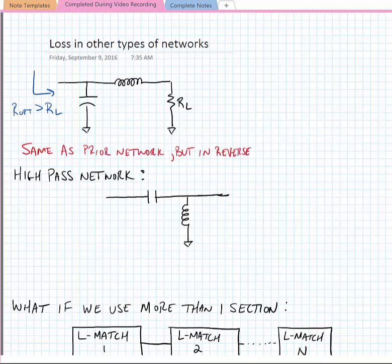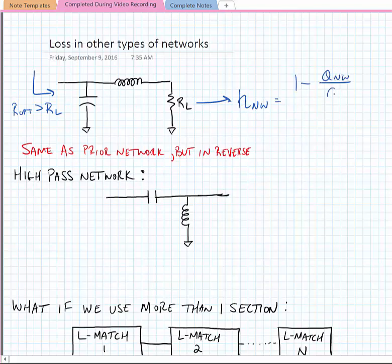Alright, so noting that we're operating in the reverse direction for this one, we can find that the efficiency of the matching network is equal to 1 minus Q_network over Q_L divided by 1 plus Q_network over Q_C.